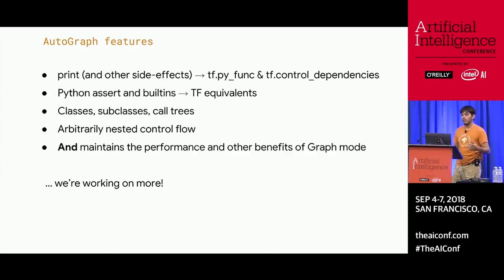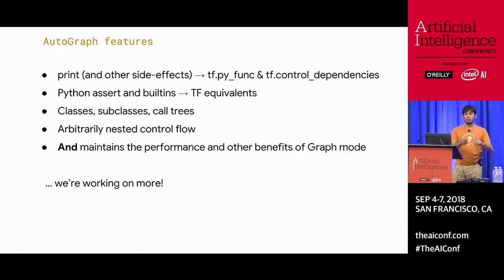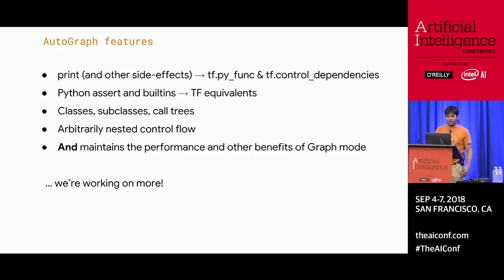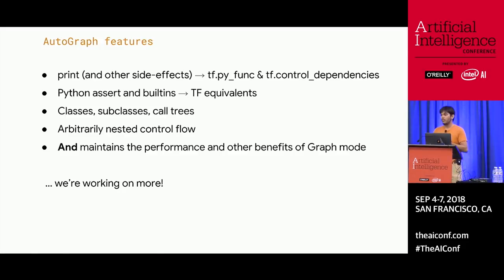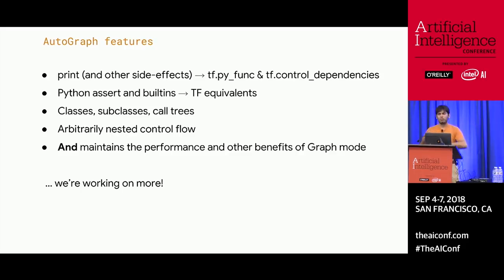What Autograph supports is a subset of the Python language that covers what you most need to run in a TensorFlow program. We can do print — and I don't know how many of you have ever failed to use tf.print, because I do about once a week. It's really hard. Also, tf.assert is very easy to have your assertion silently dropped. Autograph is also composable, so you can have arbitrary Python code with classes, functions, and complicated call trees, and it'll turn the whole thing into a graph for you. You can have nested control flow with breaks and continues, and we can make that work.